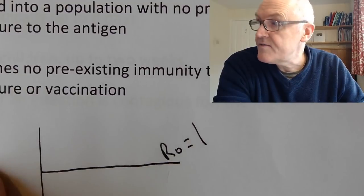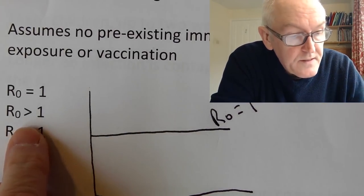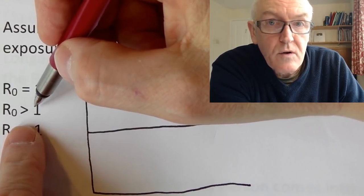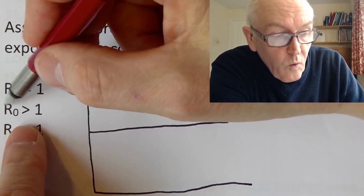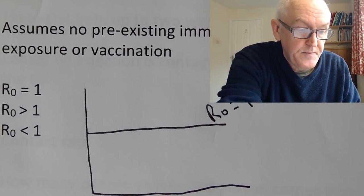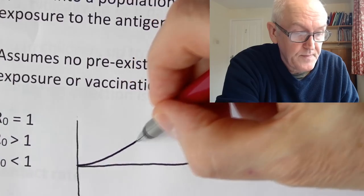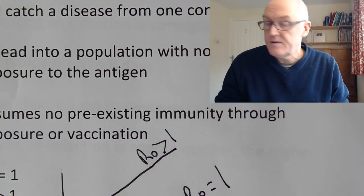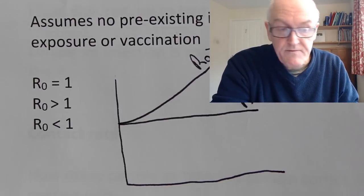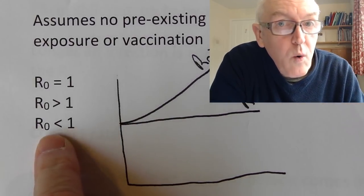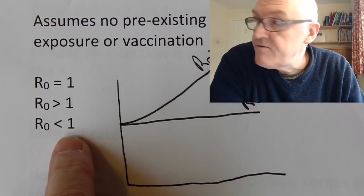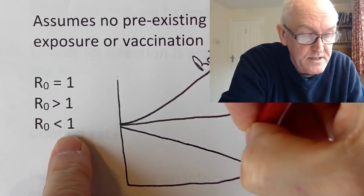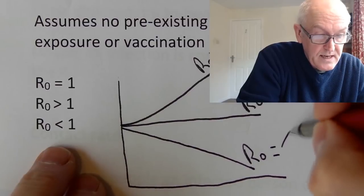If R0 is greater than one — whether it's 1.1, 1.2, 5, or 12 — each infected person is infecting more than one other person, and the number of cases will rise. To stop the spread of infections, we need to get the R0 below one. If R0 is below one, on average each infected person will infect less than one other person, so the number of cases will go down and hopefully the disease will disappear.